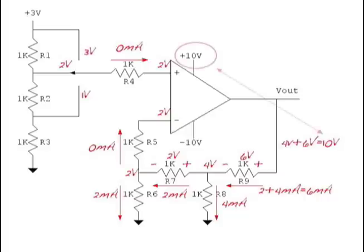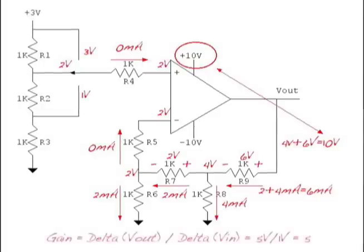Now, assuming this is a rail-to-rail op-amp, the output can be 10 volts. Since the supply voltage is 10 volts, 10 volts is about as high as Vout can ever get. Now we can talk about gain. Gain is defined as delta Vout over delta Vin. Since we had a five volt change on the output for a one volt change on the input, the gain of the circuit is five. You don't need an advanced math degree to figure that out — just work out the math using Ohm's law and you've got the answer.